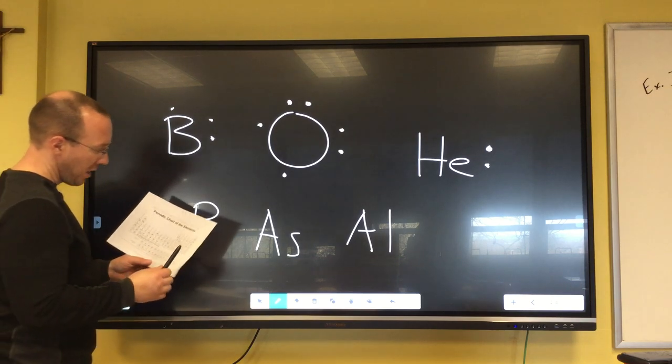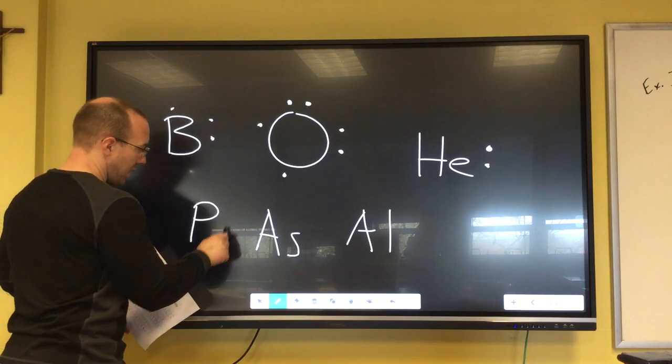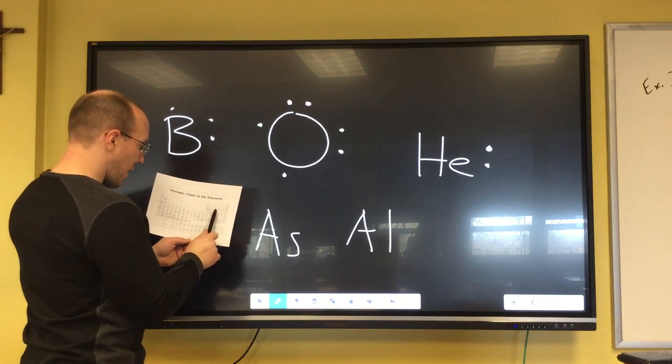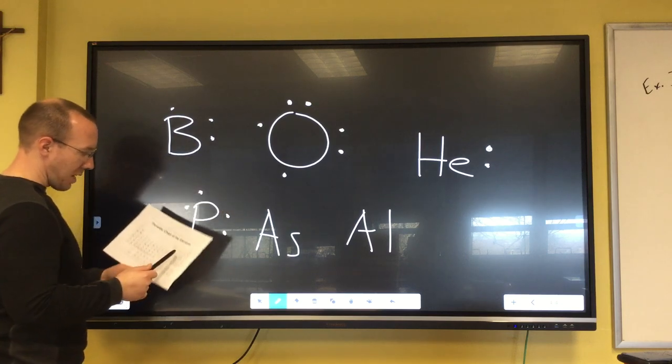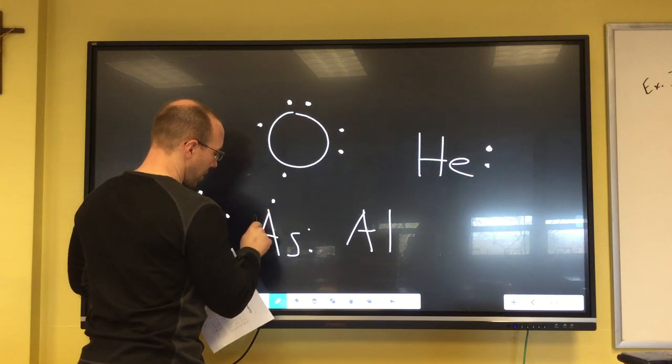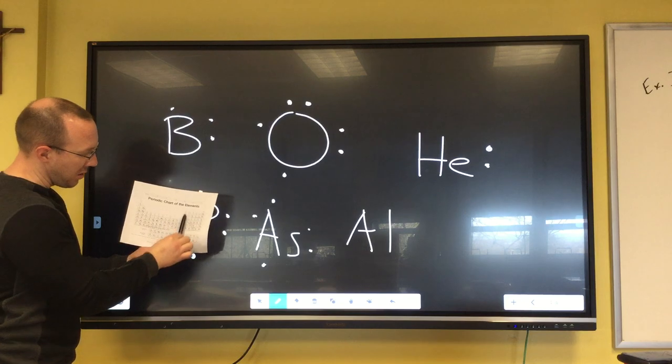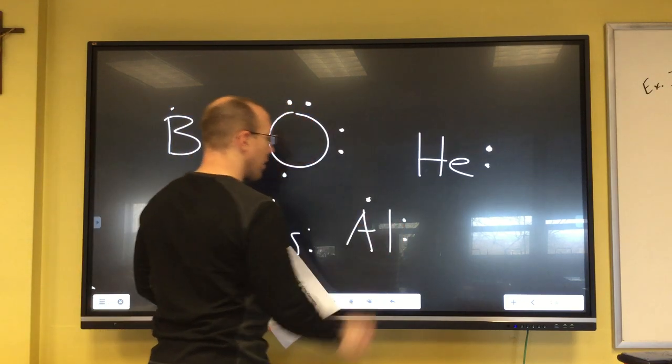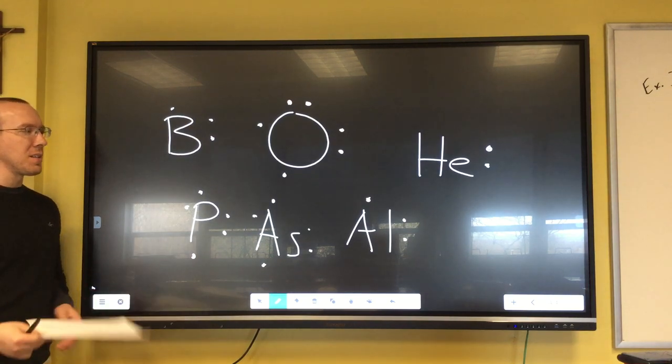Phosphorus is right under nitrogen: one, two, three, four, five. Arsenic, right under nitrogen again, so it also has five: one, two, three, four, five. And then aluminum, here's aluminum right under boron: one, two, three. And our dot models are as simple as that. They show all of the valence electrons.